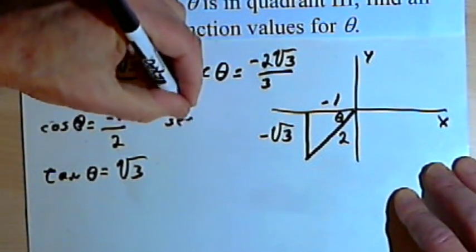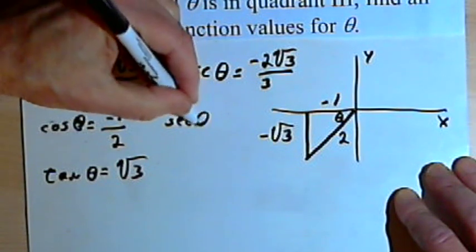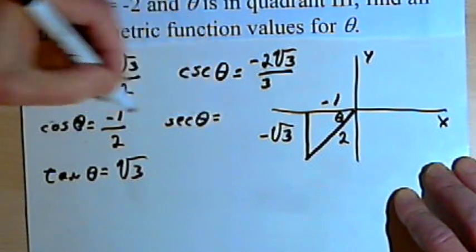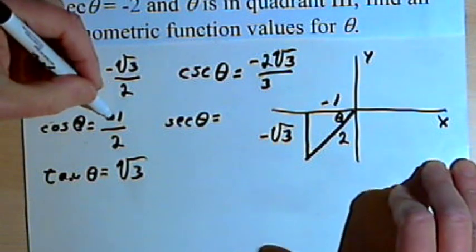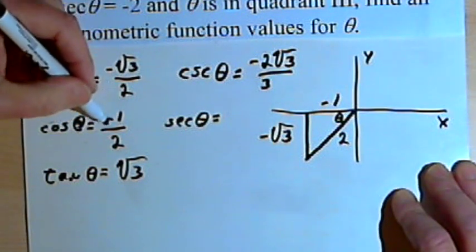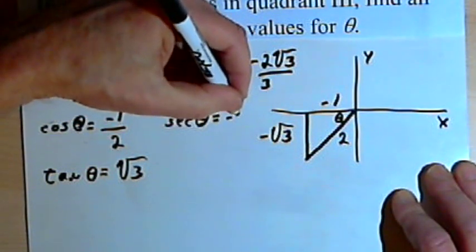For the secant, that's the reciprocal of the cosine. I'll just flip that cosine. That was negative 1 over 2. That's going to be negative 2 over 1. We'll just make it negative 2.